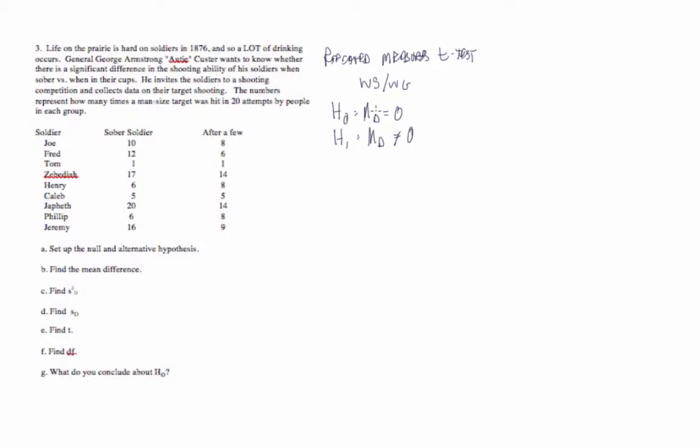So conceptually, what we're seeing here is that the null hypothesis is that we don't see any difference between the soldiers when they're sober versus after they've had a few drinks. The alternative hypothesis says that there is going to be a difference, but we don't know if there are going to be better shots or worse shots. The first step, then, is to set up the mean difference score. That's represented as a d with a line over it. That's the sum of the difference scores over n. So we're going to have to figure out what our difference scores are first.